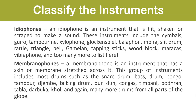Idiophones are instruments that are hit, shaken, or scraped to make a sound. These include the cymbals, guiro, tambourine, xylophone, glockenspiel, balafon, mbira or thumb piano, slit drum, rattle, triangle, bell, gamelan, tapping sticks, woodblock, maracas, vibraphone, and too many more to list.